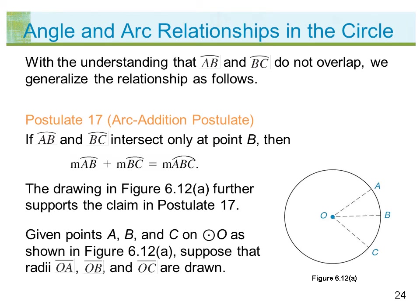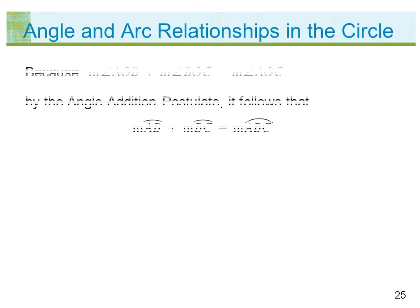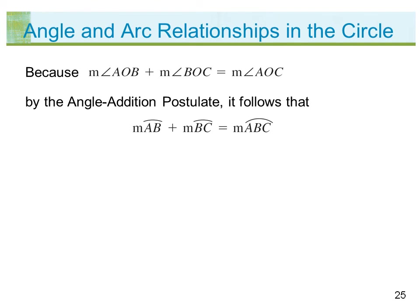Postulate 17, the Arc Addition Postulate: if arc AB and arc BC intersect only at point B, then the measure of arc AB plus the measure of arc BC equals the measure of arc ABC. Given points A, B, and C on circle O as shown in figure 6.12a, radii OA, OB, and OC are drawn. Because the measure of angle AOB plus the measure of angle BOC equals the measure of angle AOC by the angle addition postulate, it follows that the measure of arc AB plus the measure of arc BC equals the measure of arc ABC.